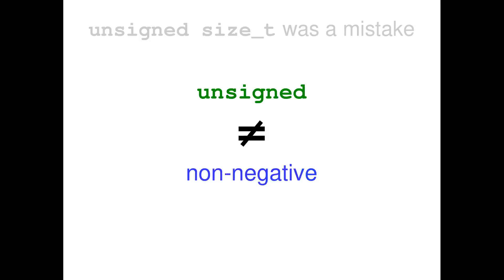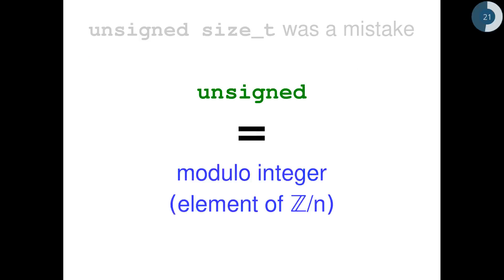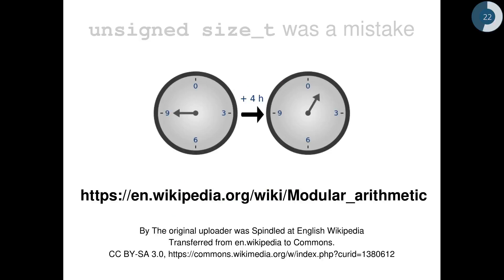The key point is that unsigned does not mean non-negative. But then, what does it mean? Unsigned for C++ means modulo integral. In mathematical terms, it's an element of Z over n. You can find on Wikipedia much more information about modular arithmetic.